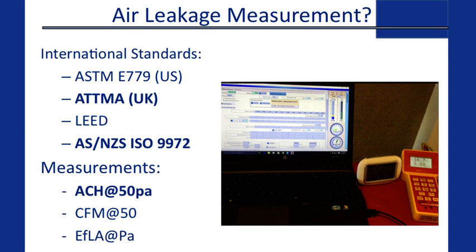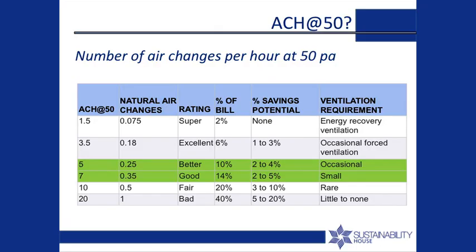So we've talked about where it leaks, how it leaks, how we find it — how do we measure it? There are a bunch of international standards, but the two main ones are ASTM and ISO, which we use in Australia currently. The most internationally recognised metric for residential housing is air changes per hour at 50 pascals — the number of times the air changes within the envelope at 50 pascals, which is roughly equivalent to a 30–35 km/h wind. The lower the number, the better — within reason for a naturally ventilated building.